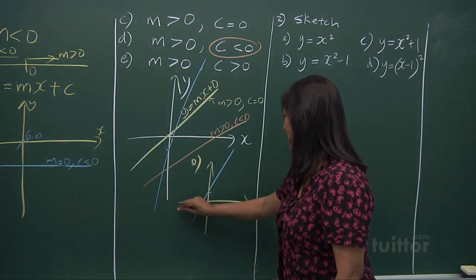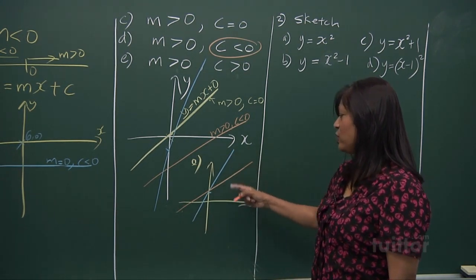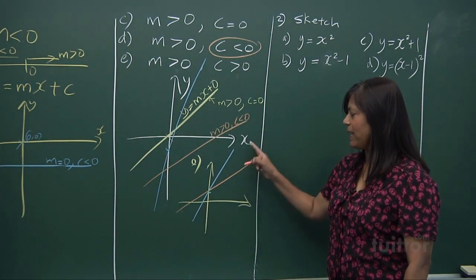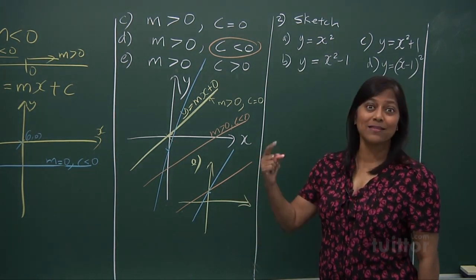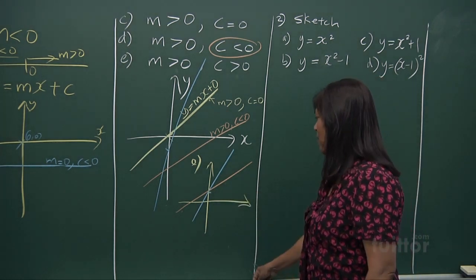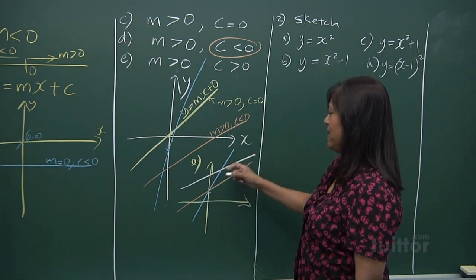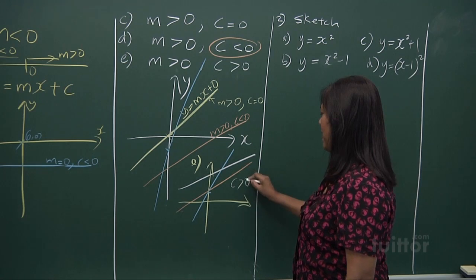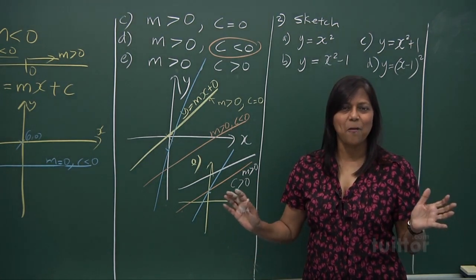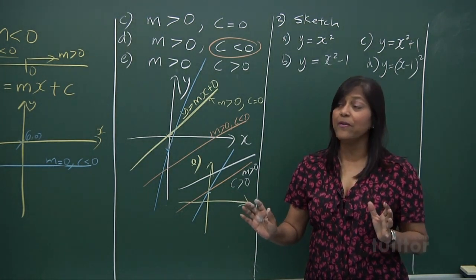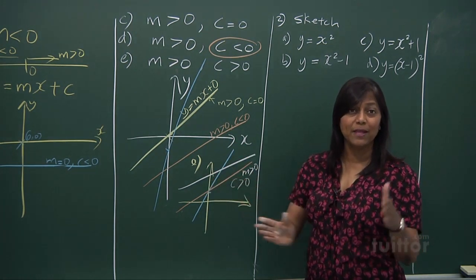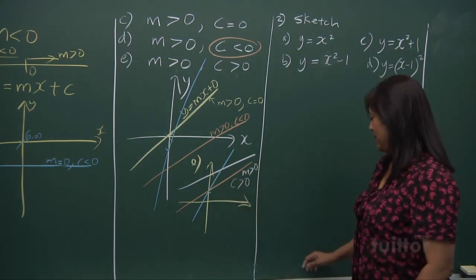Or if I have another graph like this — look at the difference between these two graphs: the slope here is less gradual, whereas the slope of this blue line is steeper, the rise is faster. But they all meet at the same point. Or I can have a graph where c is greater than 0 and m is greater than 0. When lines have the same gradient, remember, they are all parallel.